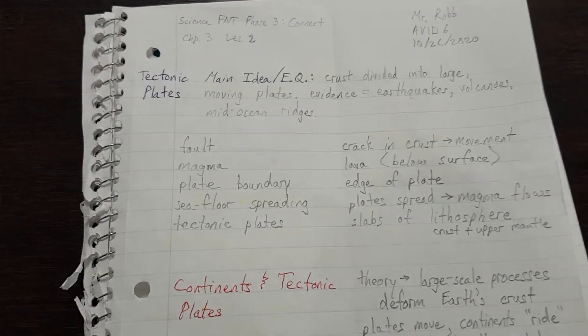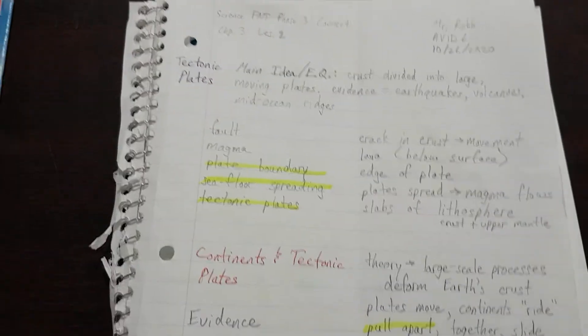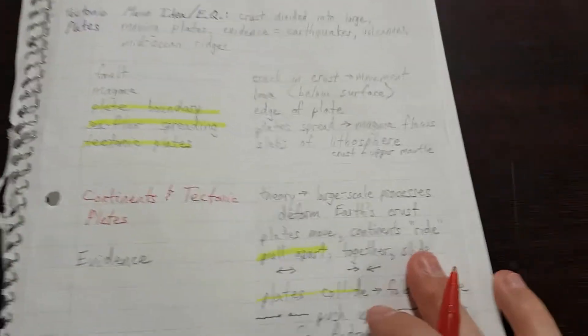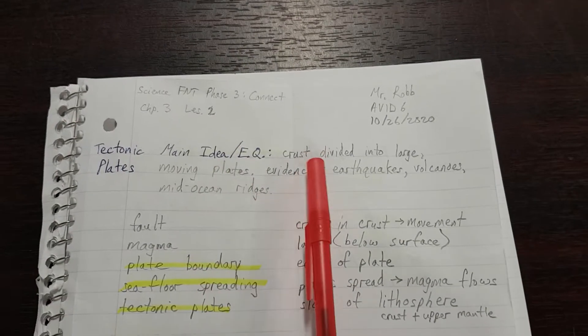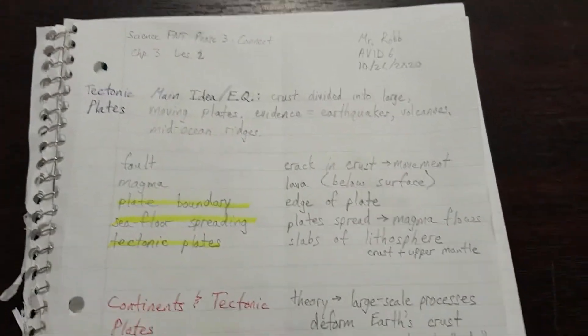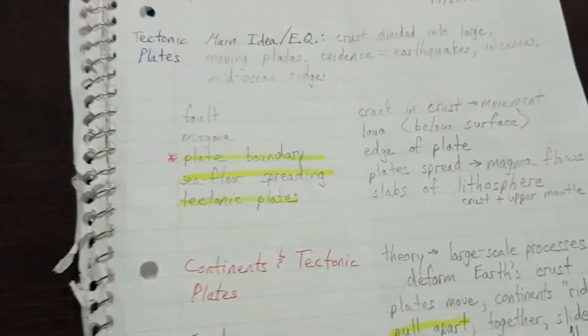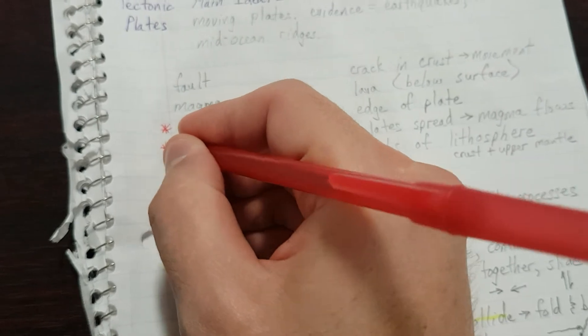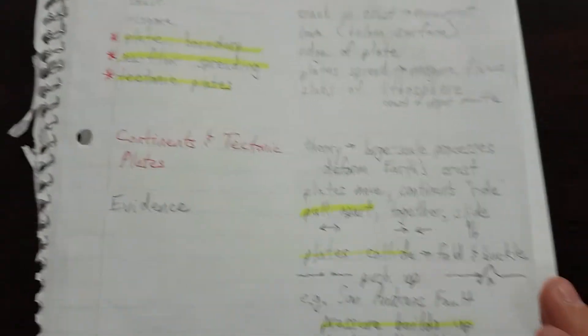Now, what vocabulary words did we see? We saw seafloor spreading, tectonic plates, and plate boundary. That was the big ones. Okay. So, let's use our red pen, our red colored pencil, our red marker. Let's highlight like the main things, right? Kind of like they're showing here. What details support the main idea? Okay. Main idea. The crust is divided into large moving plates. Let's find anything about large moving plates. Well, we have plate boundary, large moving plates, seafloor spreading. We know that's helping them move. And tectonic plates. Okay. So, we're going to try to use all three of our vocabulary words.